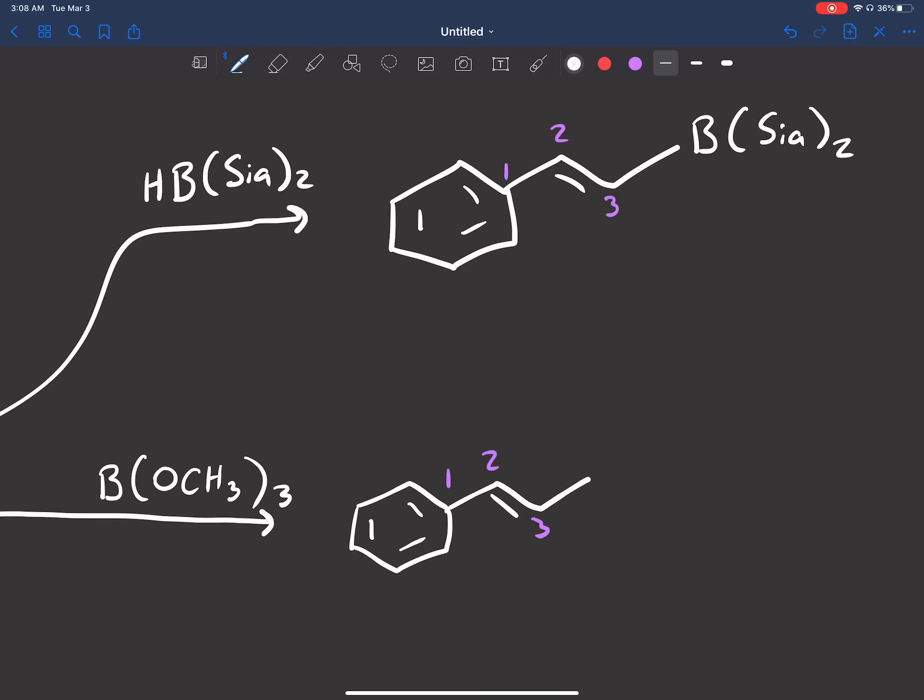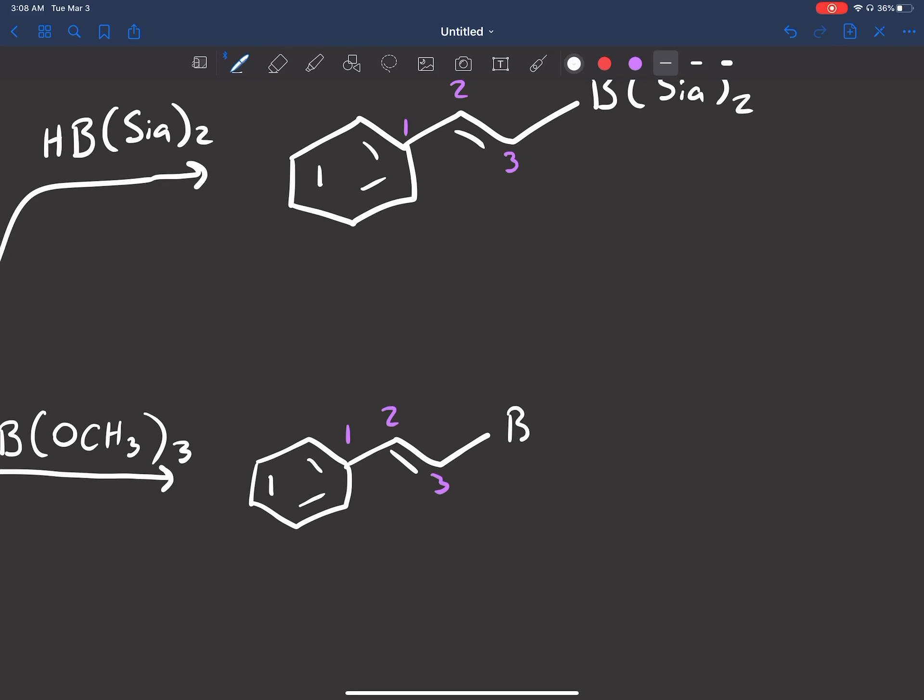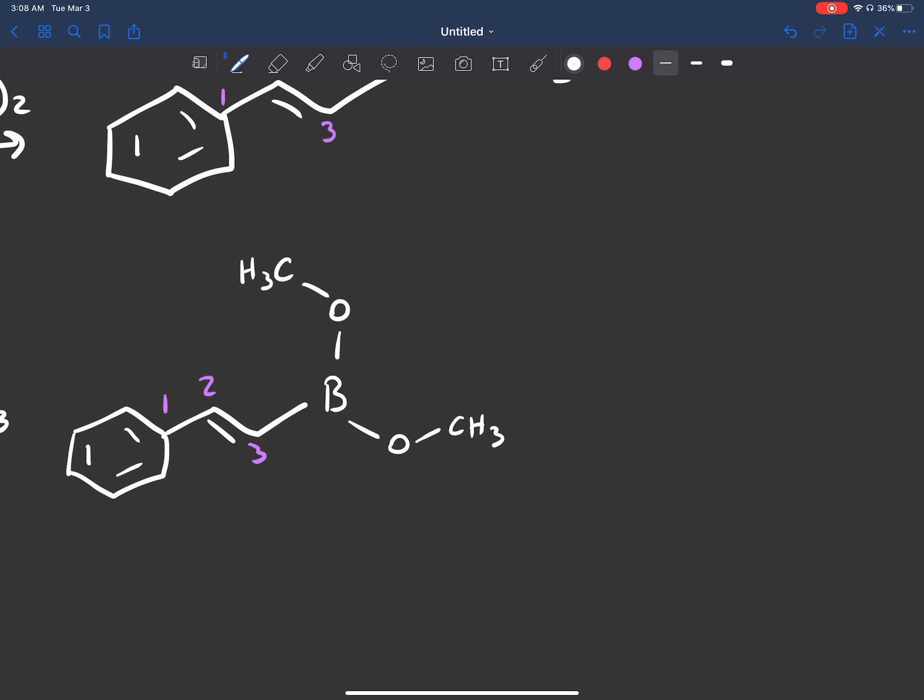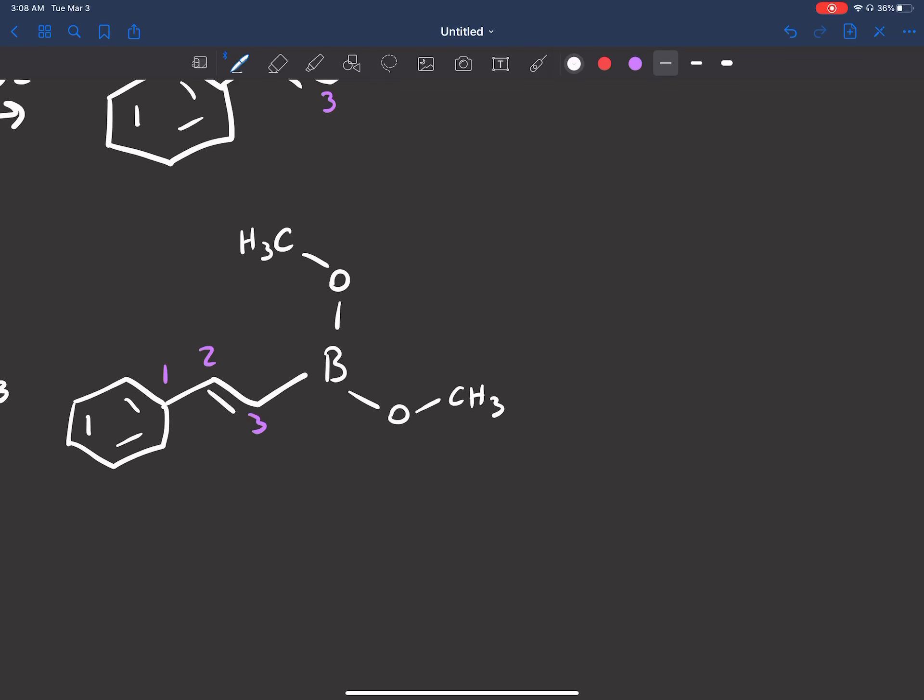And what the product is going to be is this. Again, that double bond changes here, number one, two, three. The two-three double bond is right there. Boron is going to be bound here, and we have two OCH3 groups now.